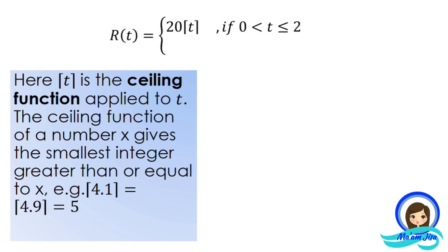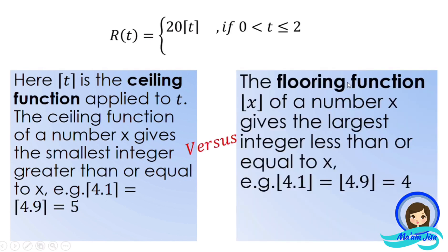The ceiling function of a number x gives the smallest integer greater than or equal to x. For example, the ceiling function of 4.1 equals the ceiling function of 4.9, which both equal 5. In contrast, the flooring function of a number x gives the largest integer less than or equal to x. For example, the floor of 4.1 equals the floor of 4.9, which both equal 4.